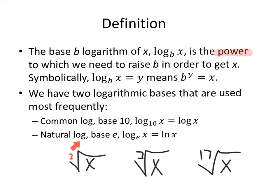Scientists and mathematicians use base e, the natural logarithmic base, frequently, and it is so frequently used it has its own special notation: ln of x, from the Latin logarithmus naturalis. It's an L, not an I — ln of x. You'll find these two buttons on your calculator, whereas the base could be any positive number except for one. We can't write all those on our calculator.